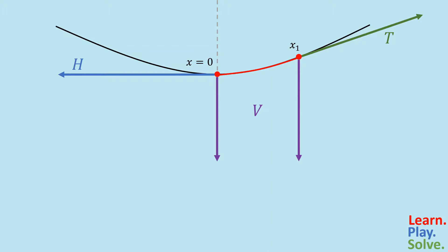These three vectors are playing tug of war, but none of them are winning. If they were, the cable would be moving in the direction of that vector. We can express the state of equilibrium mathematically by saying vector h plus vector v plus vector t equals 0.